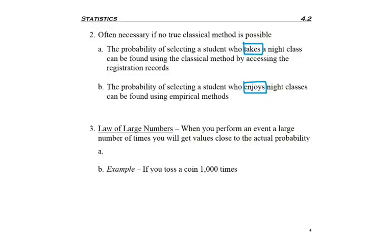When it comes to the empirical method, because you're repeating a procedure, the law of large numbers is an important concept. This says when you perform an event a large number of times, you'll get a value close to the actual probability.